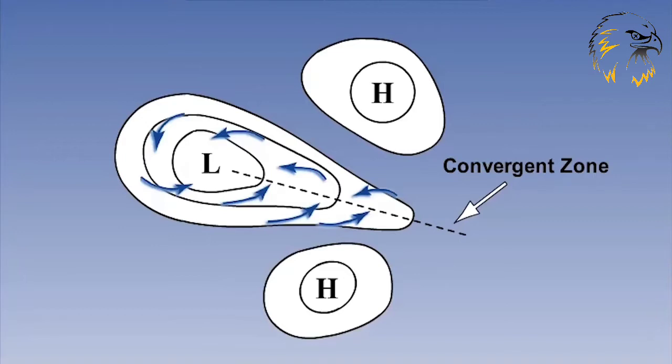This results in a convergence zone that encourages the air to rise. This convergence zone can be very active and areas of convergence need to be monitored very closely for potential weather.